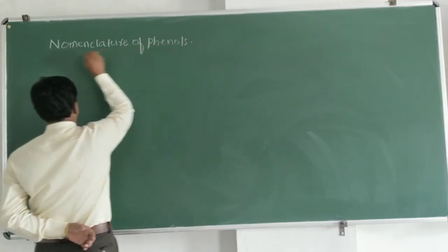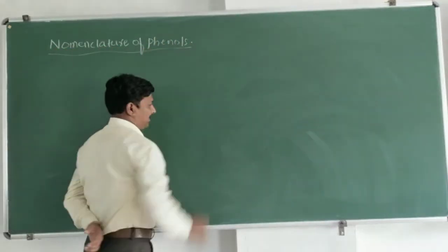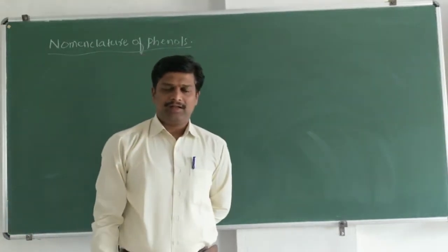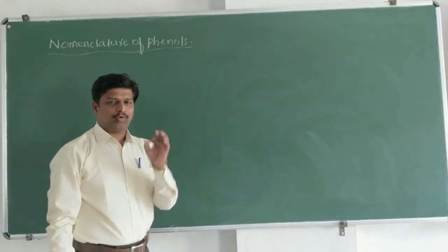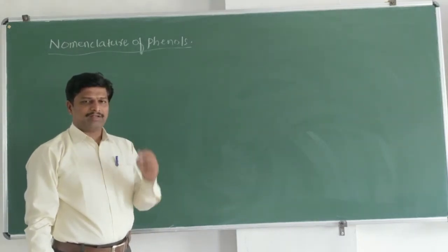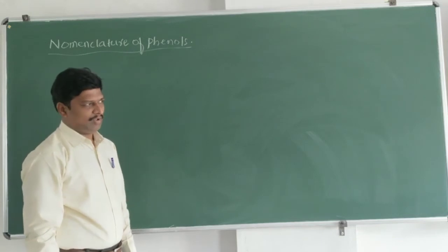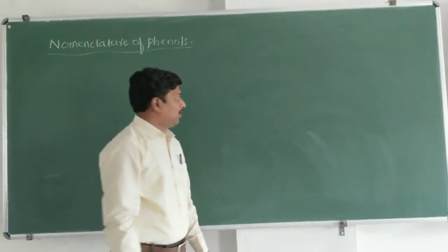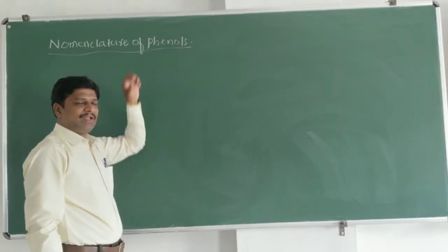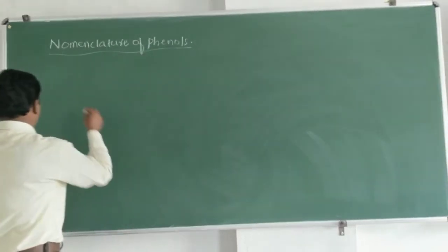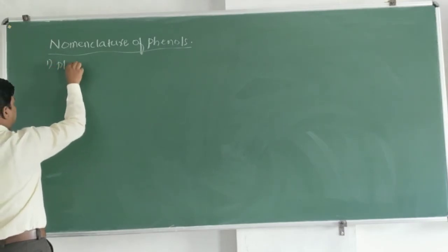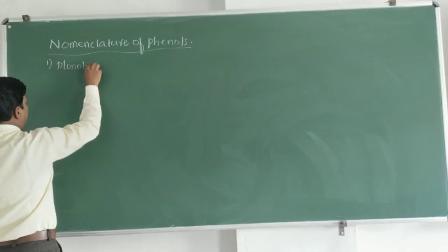As we know, phenols are classified into three types: the first is the monohydric phenol, the second is the dihydric phenol, and the third is the trihydric phenol. So let us start with the nomenclature of these three types of phenols. First of all, we will look at the monohydric phenols.